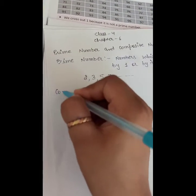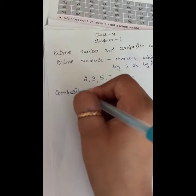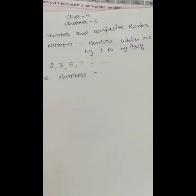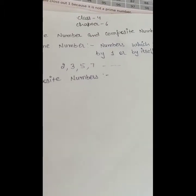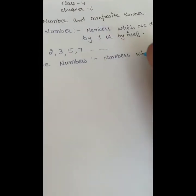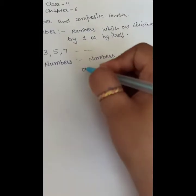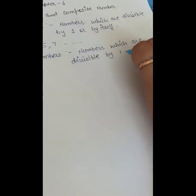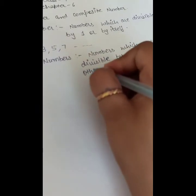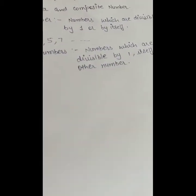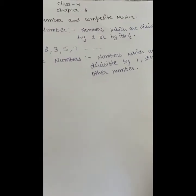The next term is composite number. Composite numbers are the numbers which are divided by one, itself, and by another number also. Numbers which are divisible by one, itself, and another number — that is a composite number.